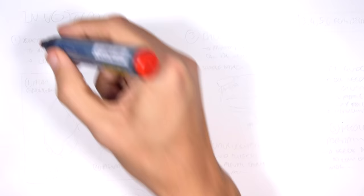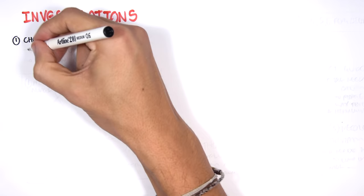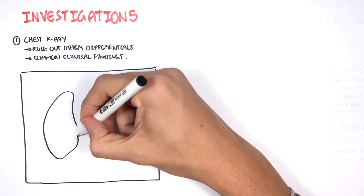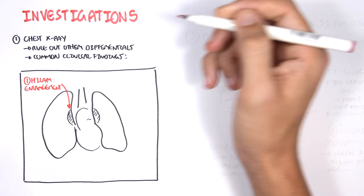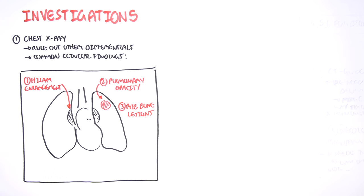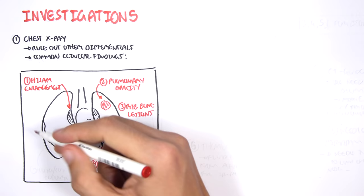Let us look at some investigations we would do if we were suspicious of lung cancer. With lung involvement, we always do a chest x-ray to rule out other differentials. Common clinical findings on x-ray for lung cancer include hilum enlargement, pulmonary opacity which represents the tumor, rib bone lesions, pleural effusion, and also lung collapse.